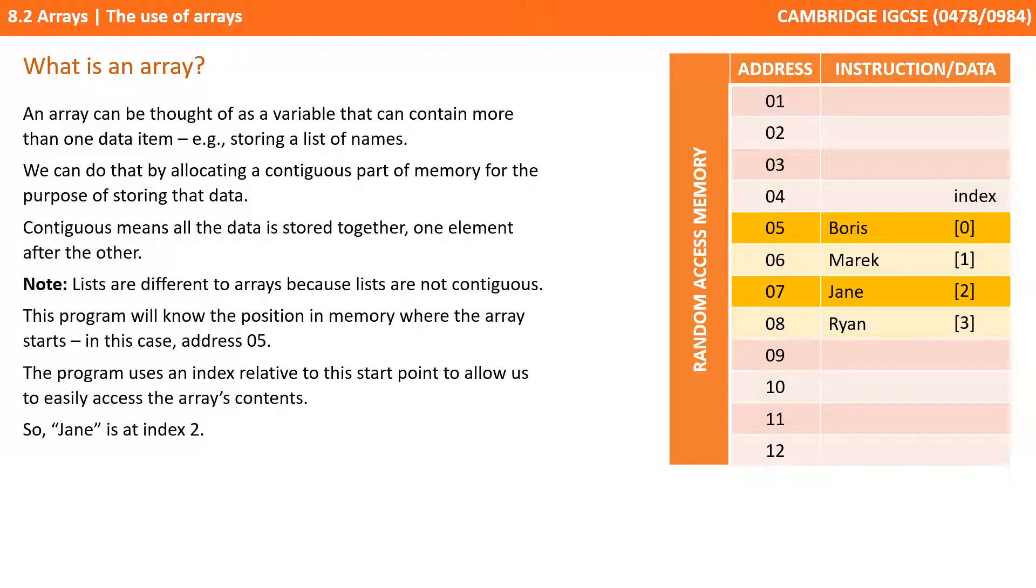Our program will know the position in memory where our array starts. In this case, address 05. The program then uses an index relative to the start point to allow us to easily access the arrays contents. So, Jane is at index 2. In this situation, we've started the index at 0, which is quite common.